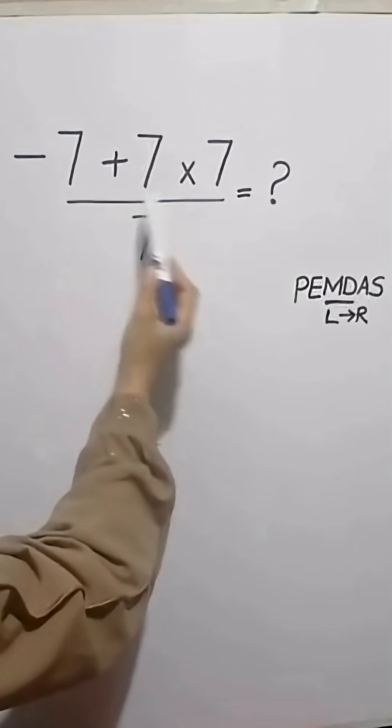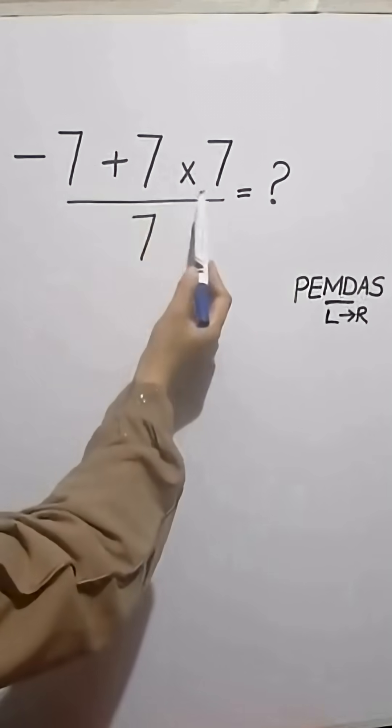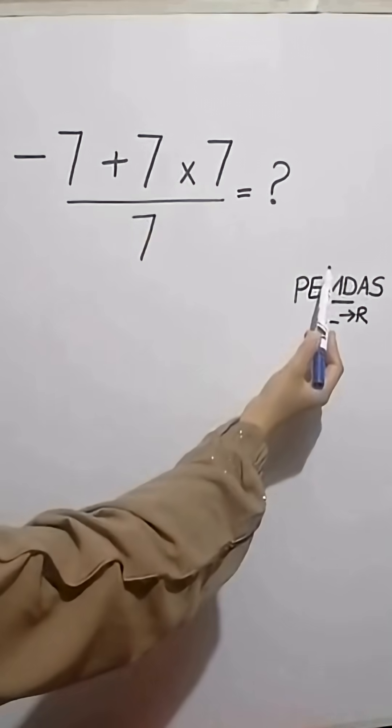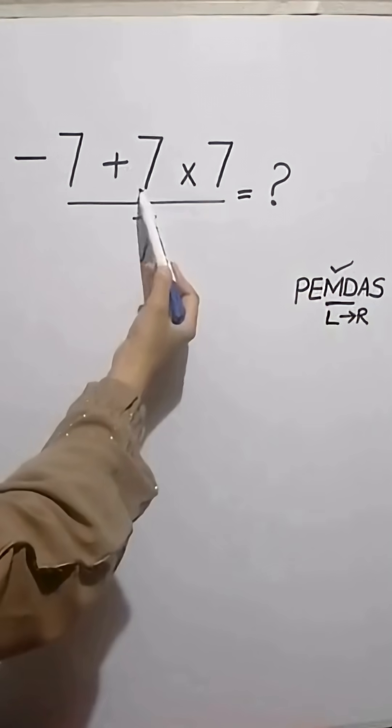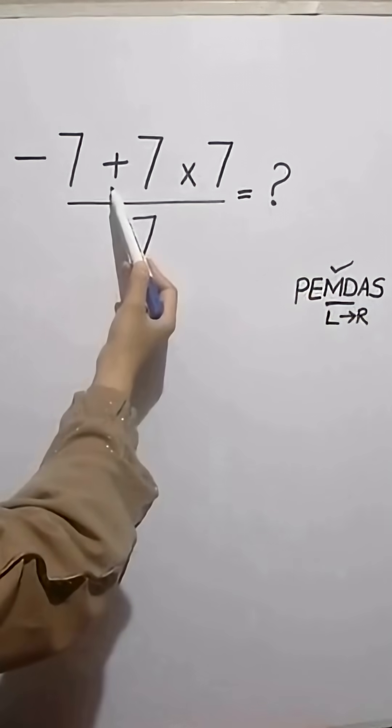Now look at the numerator. There's an addition and a multiplication. Multiplication should be handled before the addition. So first do the multiplication, then addition.